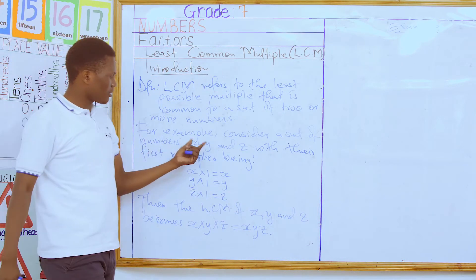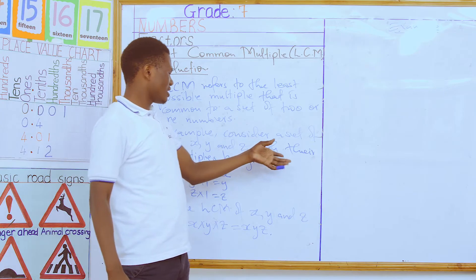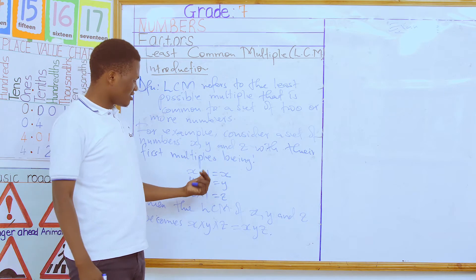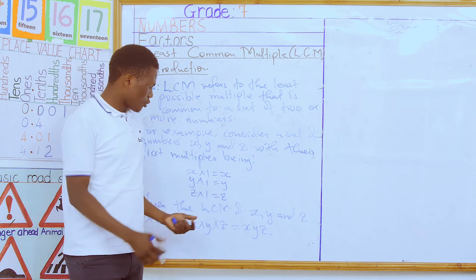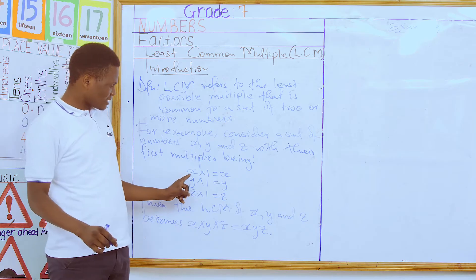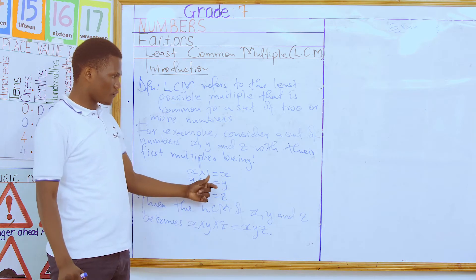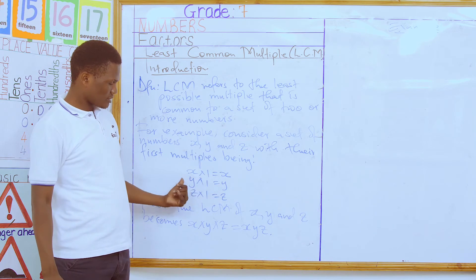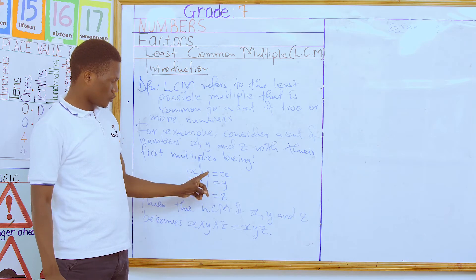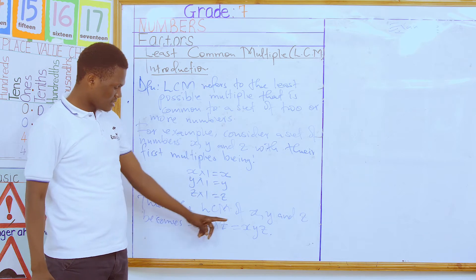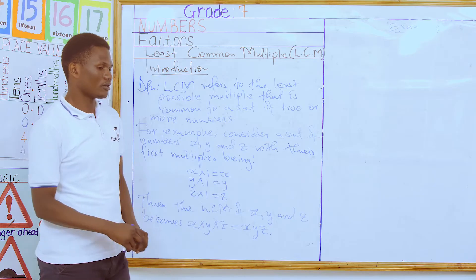So if you have a set of three numbers x, y, and z, with their first multiples being one in each case — expressing x, y, z each as a product of one times itself — then the LCM becomes the product of the three numbers.